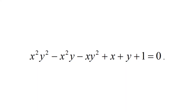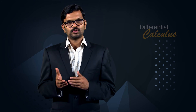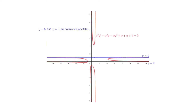Consider x²y² − x²y − xy² + x + y + 1 = 0. The highest power of x is x² and its coefficient is y² − y. Equating this coefficient to zero, y² − y = 0, we get two horizontal asymptotes: y = 0 and y = 1.